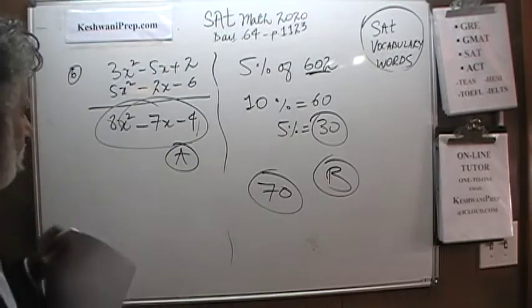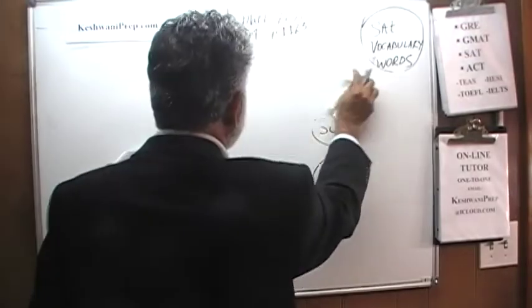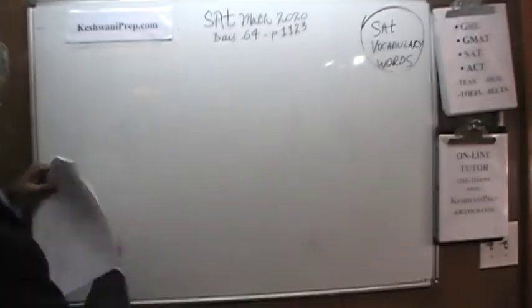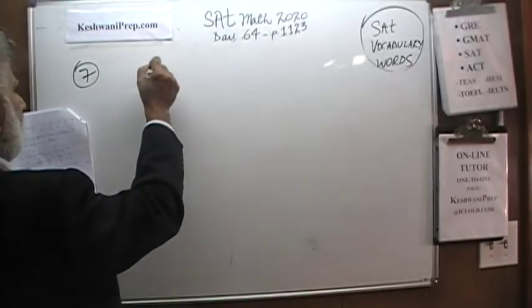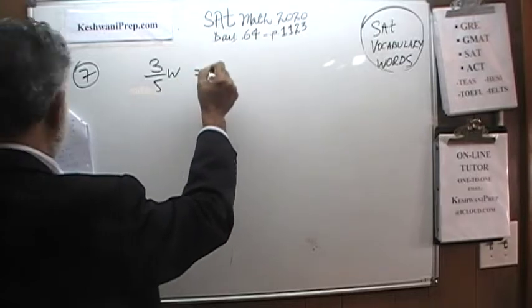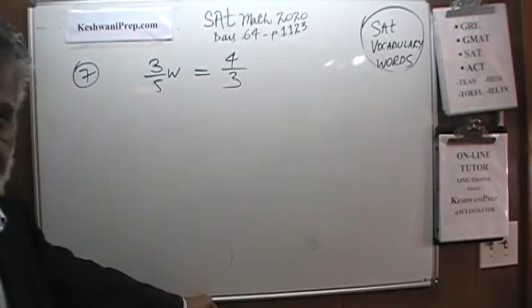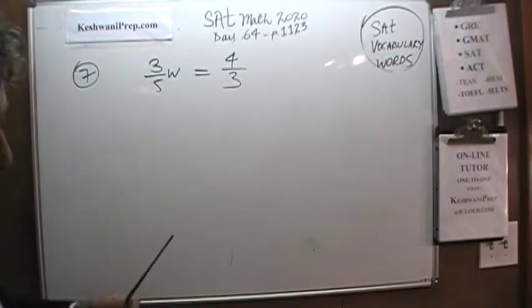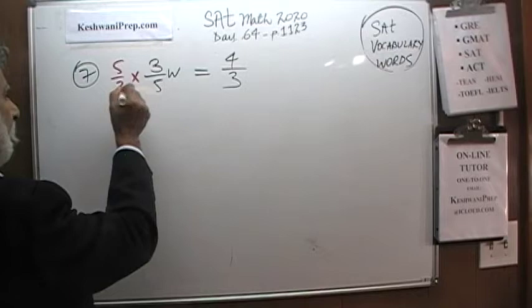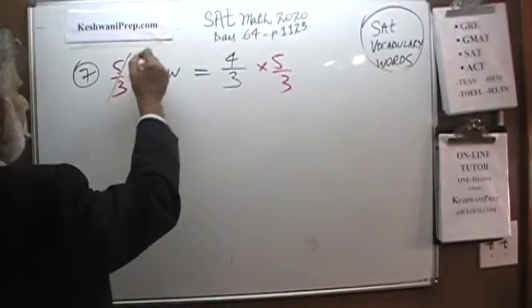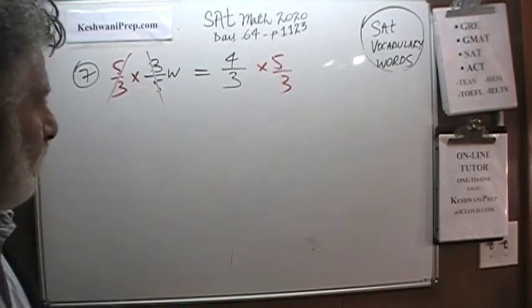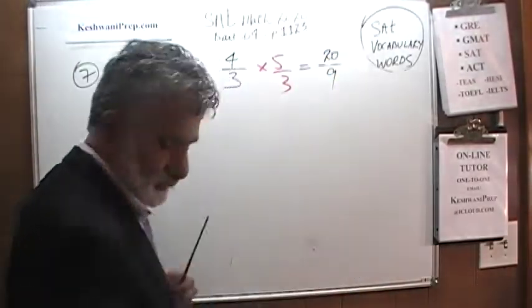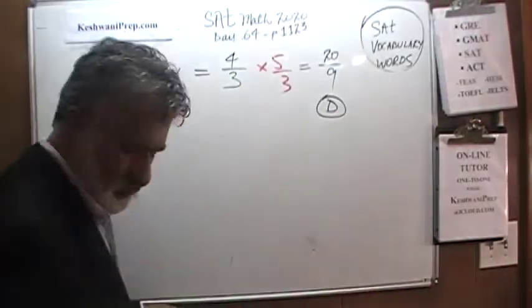Number seven. We have three-fifths w is equal to four-fourths. Three-fifths w is four-fourths. Somehow we have to get rid of this three-fifths and we're going to do so by multiplying both sides by the reciprocal five-thirds. There you go. Now three-fifths times five-thirds, which was the whole point so that we can have the w by itself. And here we have 5 times 4 which is 20 over 9. And that is answer choice D. That was number seven.